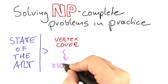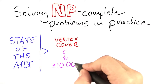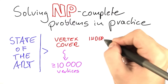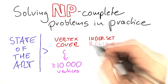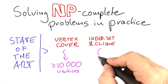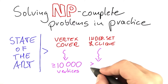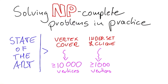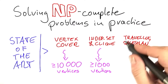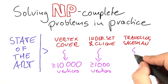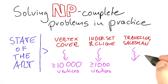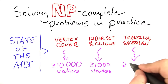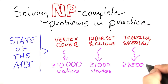For vertex cover on practically relevant inputs, you can sometimes find the vertex cover for graphs with over 10,000 vertices. For independent set and clique, solutions have been calculated for many graphs with over 1,000 vertices. And for traveling salesman, which is very close to shortest tour — and sometimes people also solve shortest tour — you really have to be specific about what kind of problem you're talking about. But there's one example where somebody solved an instance with over 85,000 vertices.